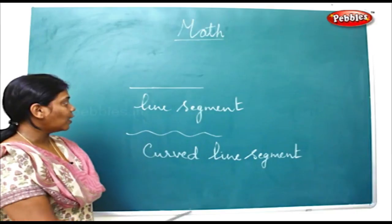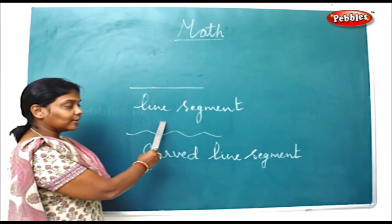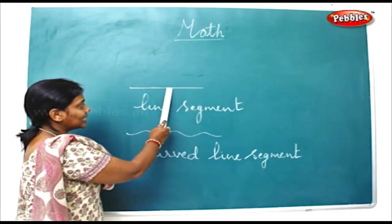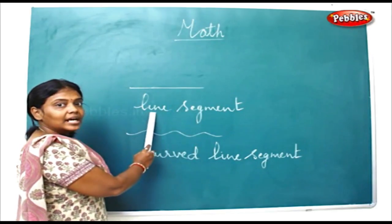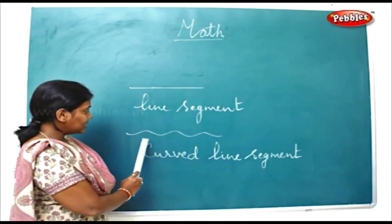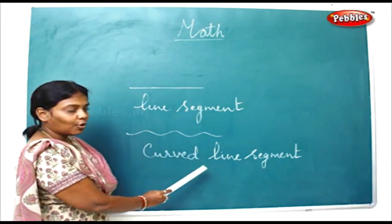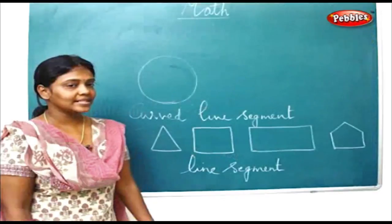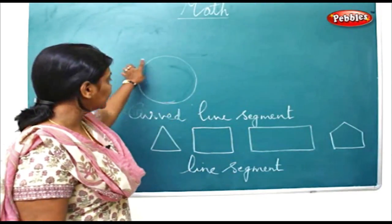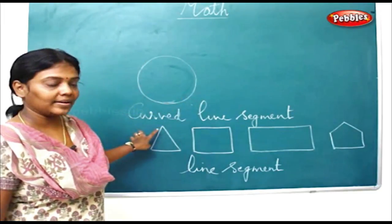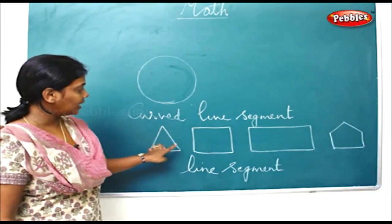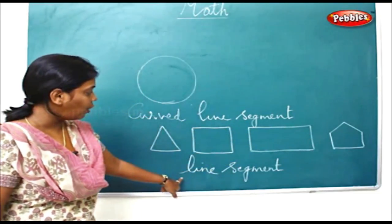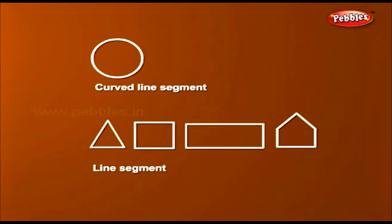Now we're going to see about a line segment and a curved segment. As you can see, this is a straight line — it is called a line segment. Whereas this is curved — you call it a curved line segment. A circle is a curved line segment, whereas a triangle, a square, a rectangle, and a pentagon are called line segments.